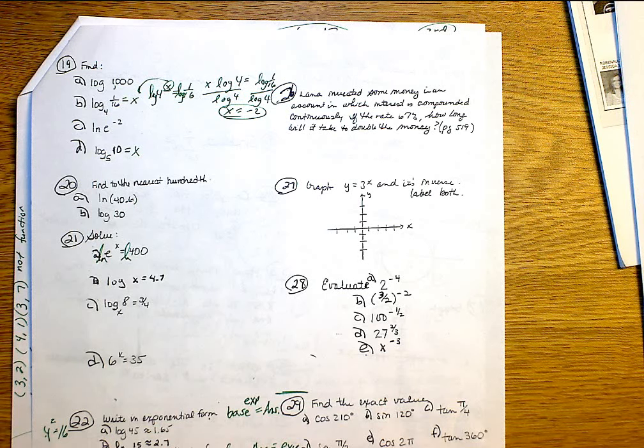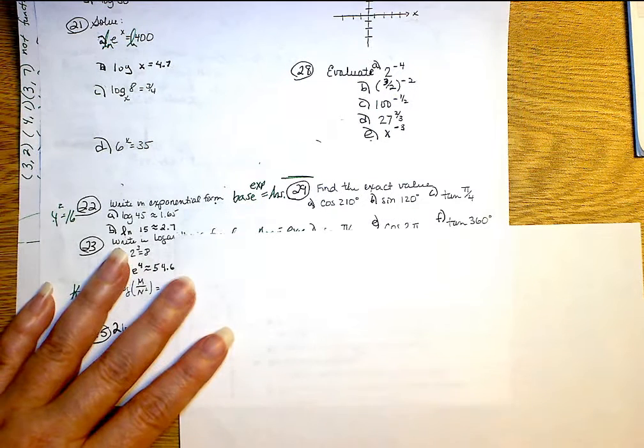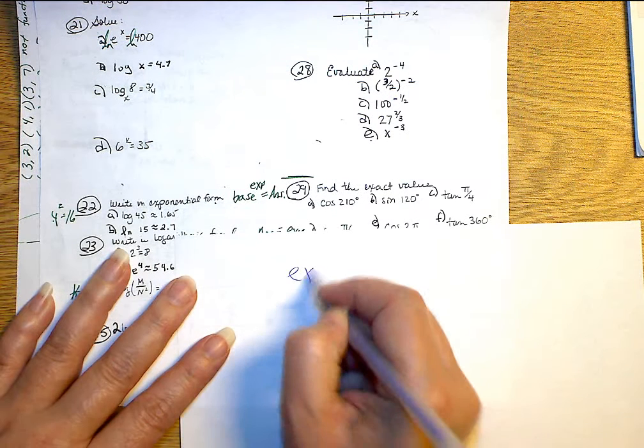29 through A through F, what you have to do is remember that exact values, exact values mean no decimals.